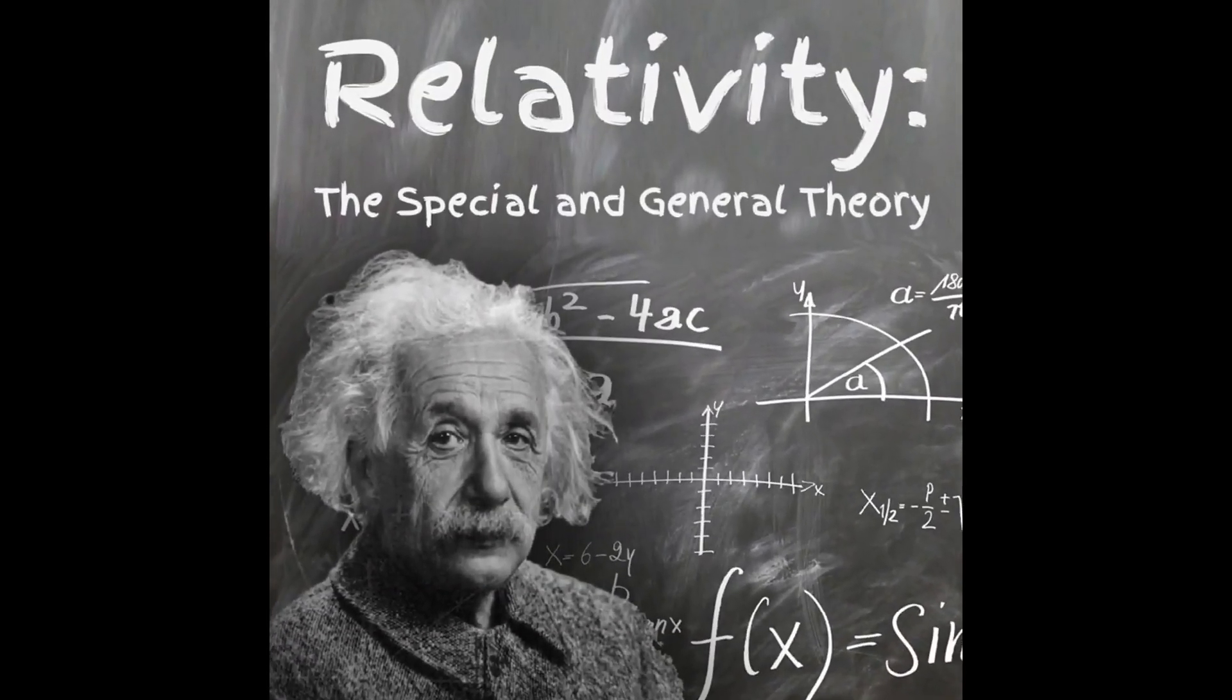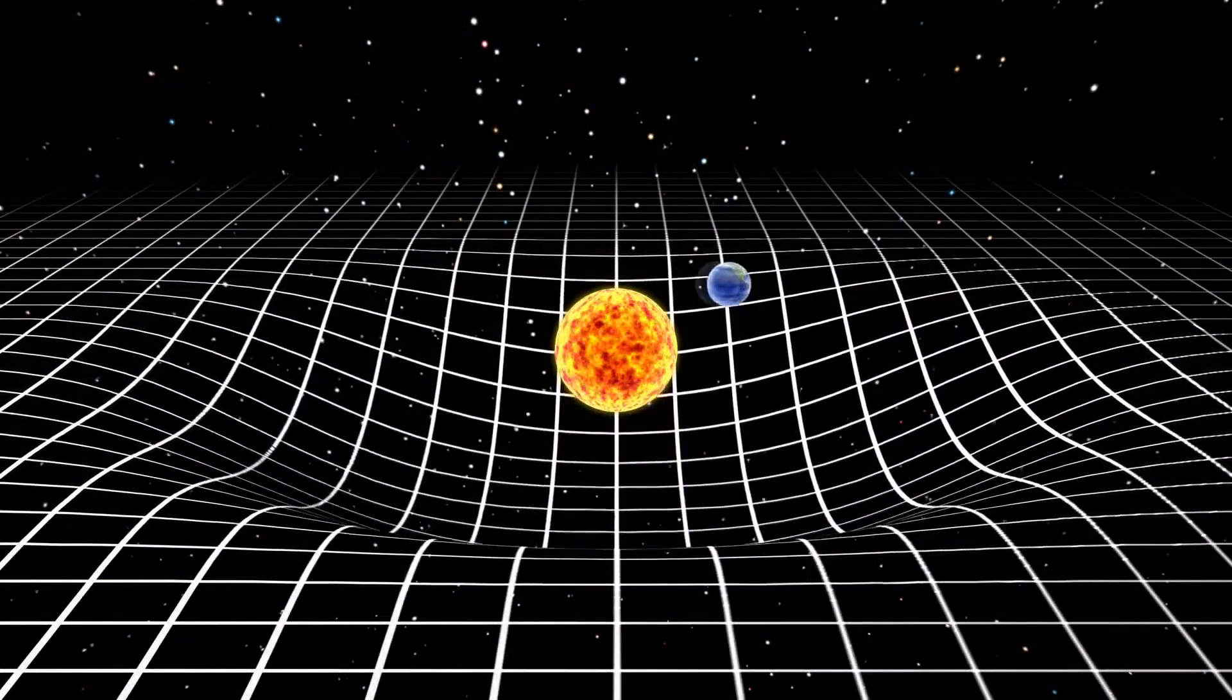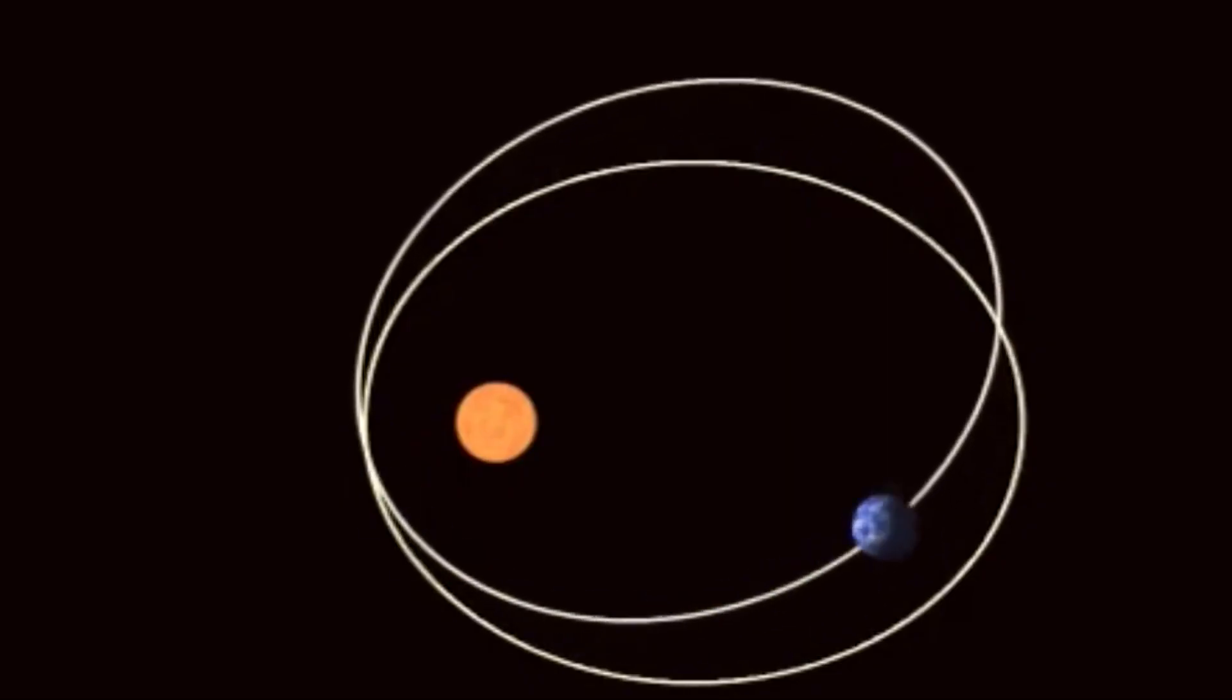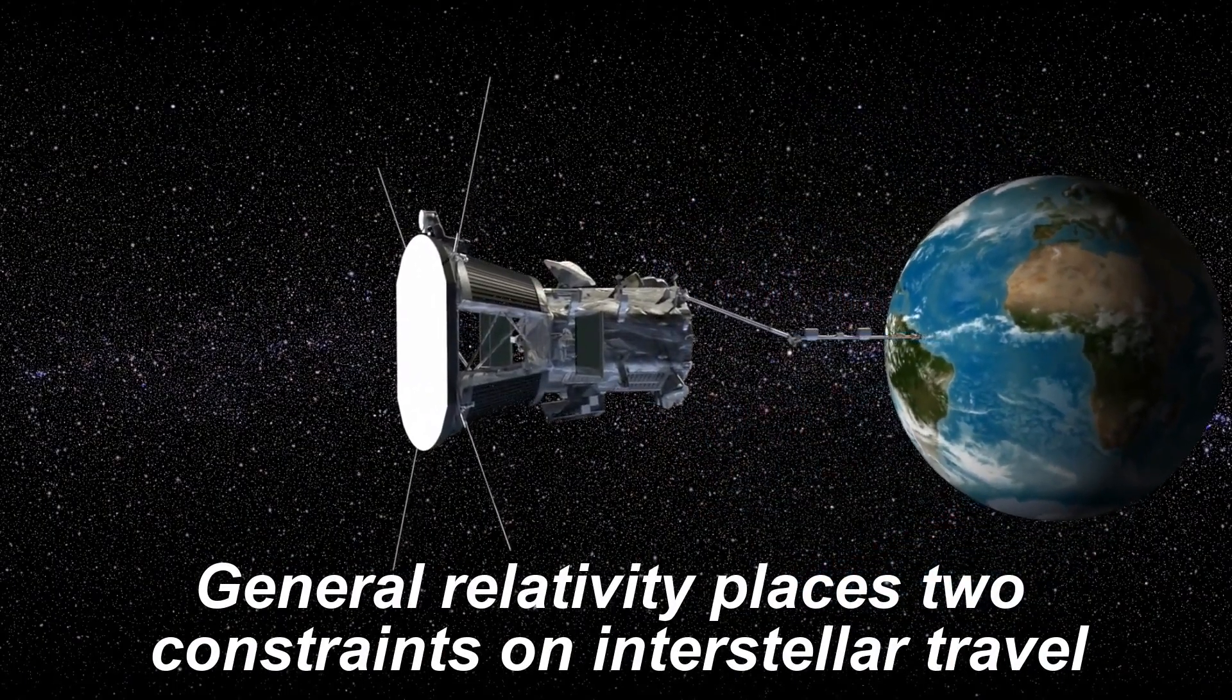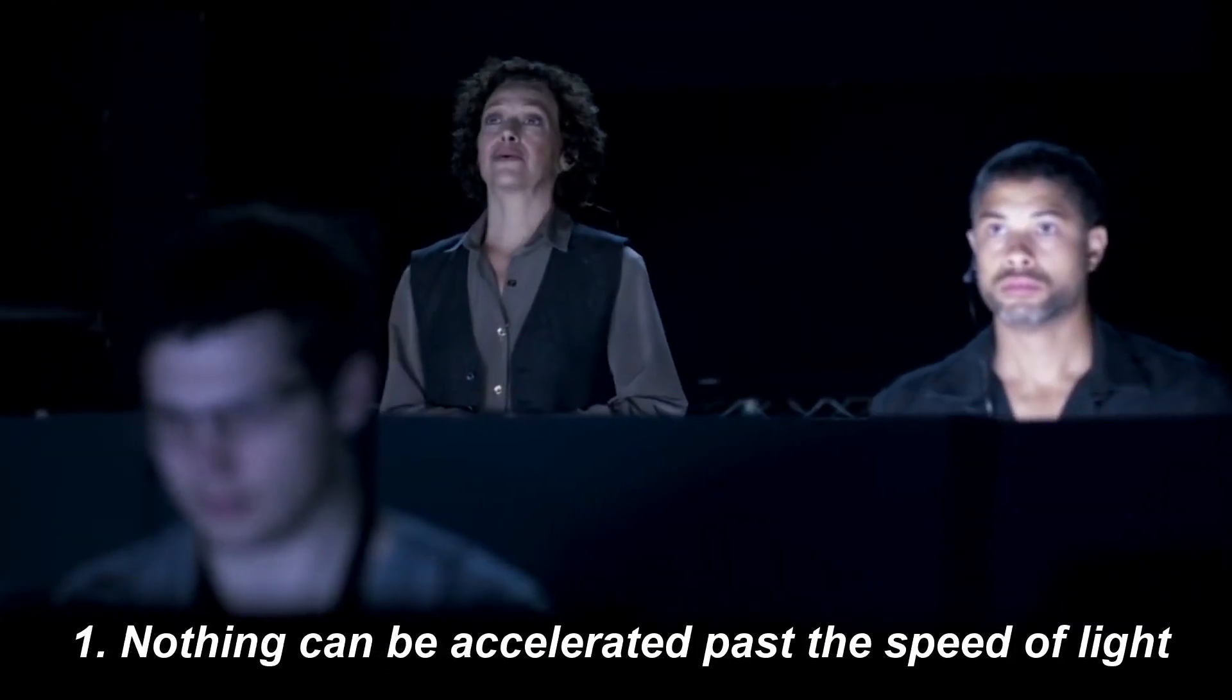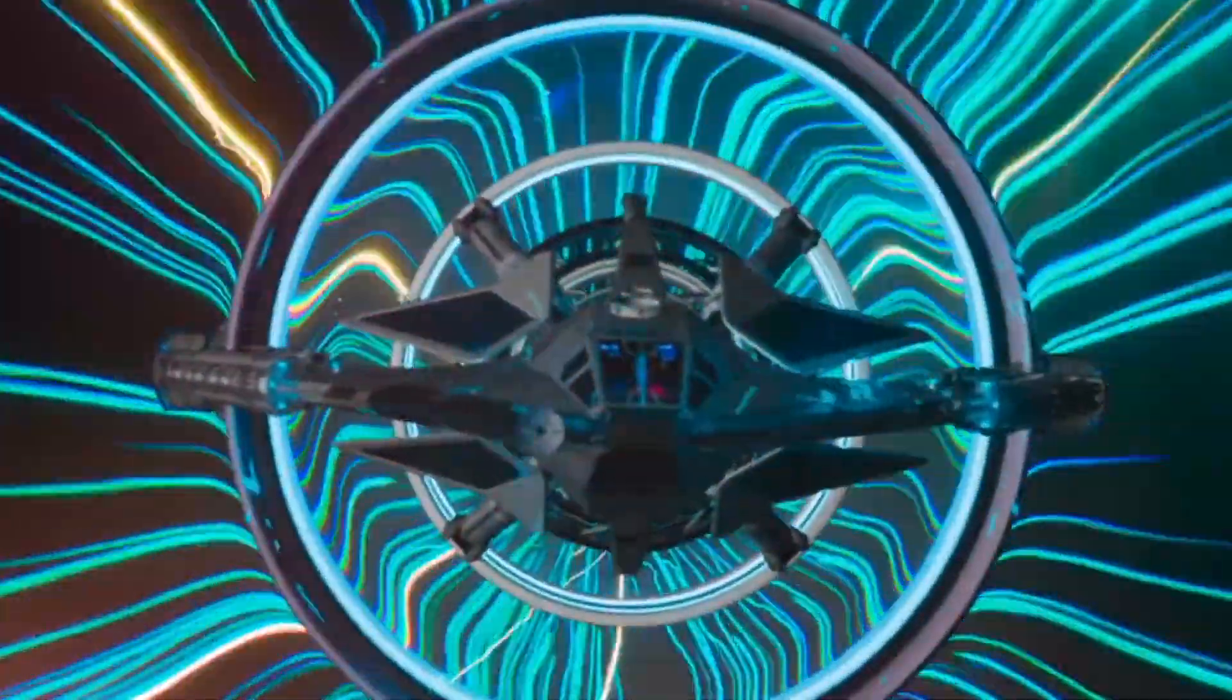The equations of general relativity capture the way in which space-time, the very fabric of reality, bends in response to the presence of matter and energy, which in turn explains how matter and energy move. General relativity places two constraints on interstellar travel. First, nothing can be accelerated past the speed of light, around 300,000 kilometers per second.